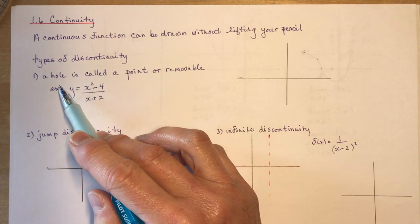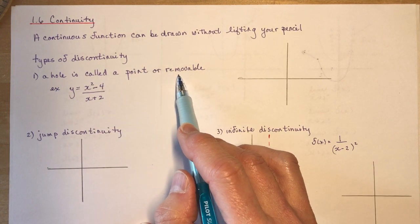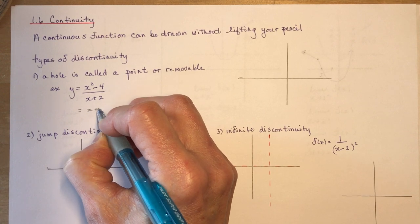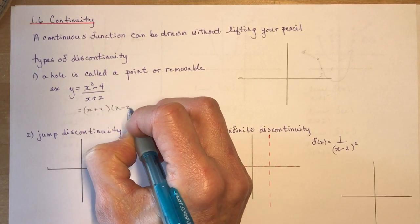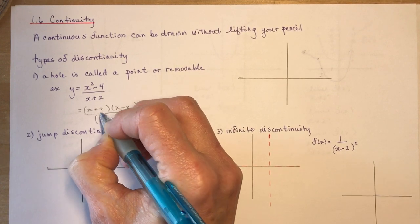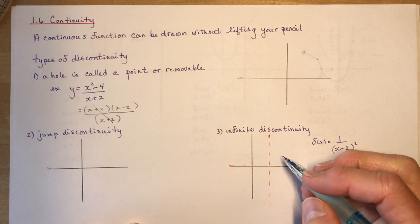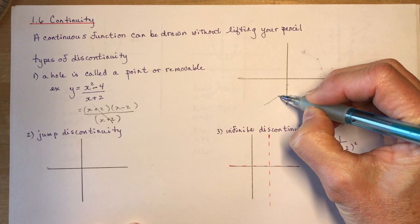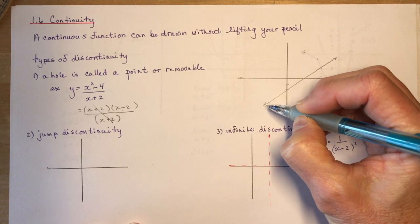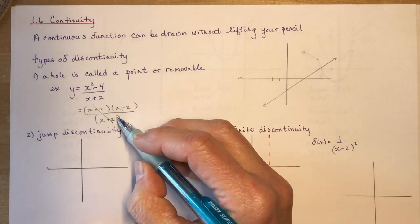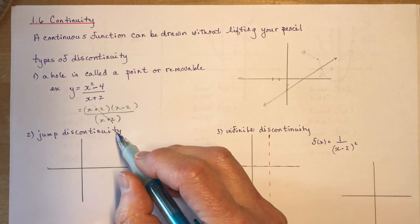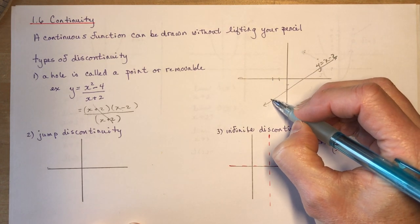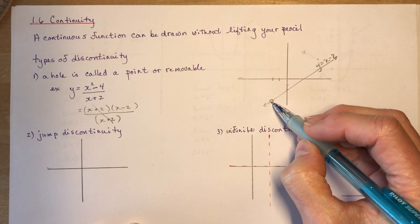Types of continuity: we can have a hole — that's a point or removable discontinuity. So if we have something like y equals x squared minus 4 over x plus 2, you could factor this to be (x+2)(x-2) divided by (x+2), giving you the line y equals x minus 2. But when x equals negative 2, the height would be negative 4, so there would be a point discontinuity there — a hole.